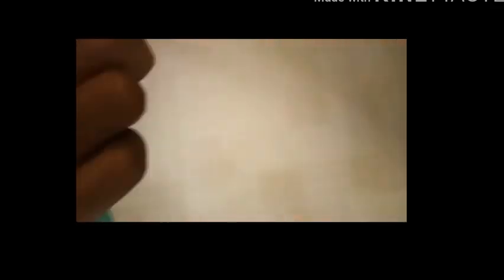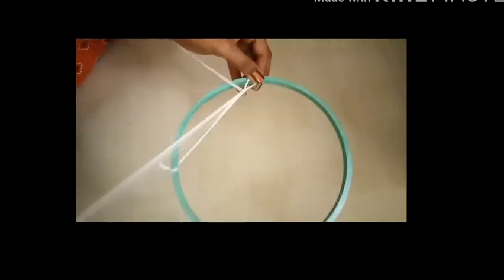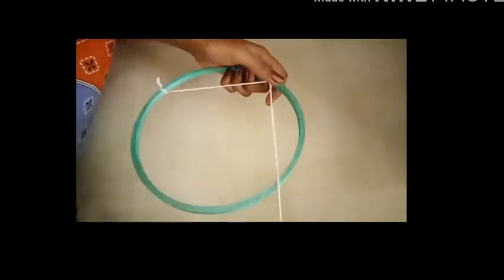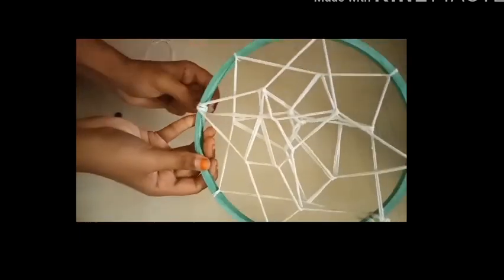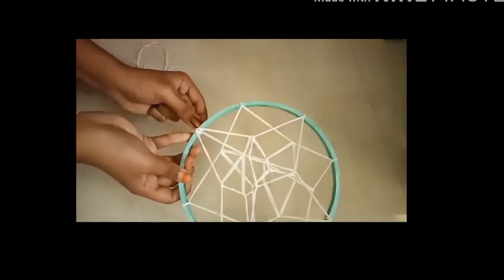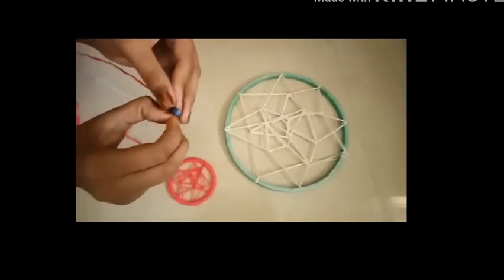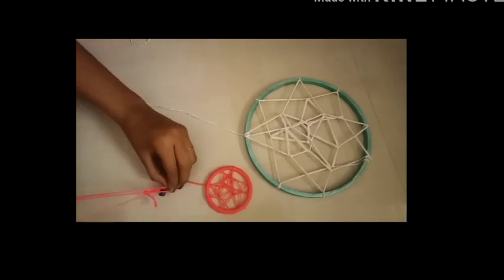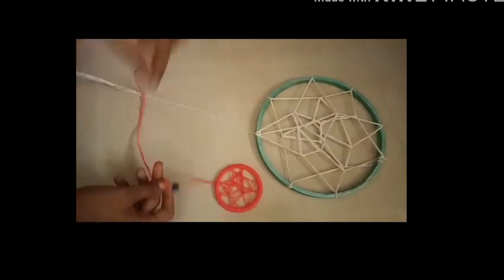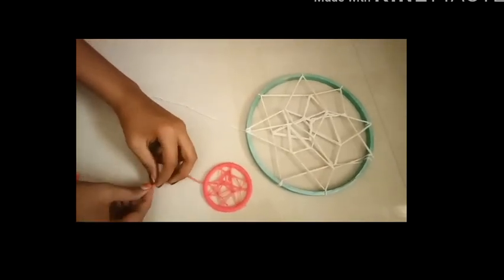We will paint the hoop. We will cut the bangle and cut the square. Then we will cut the zigzag.